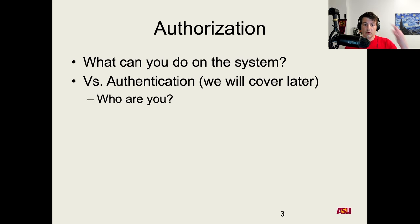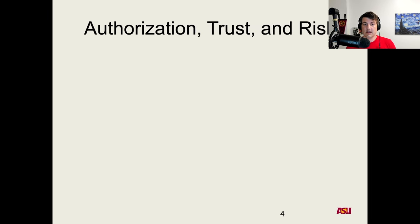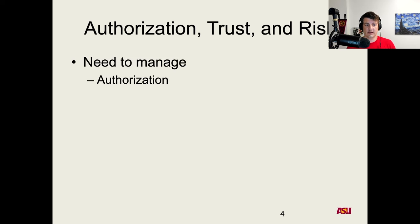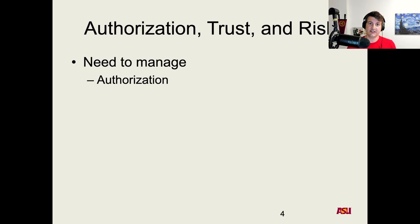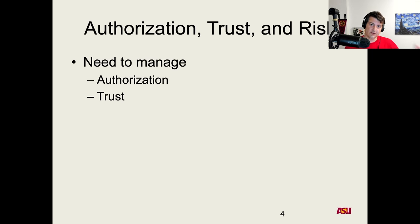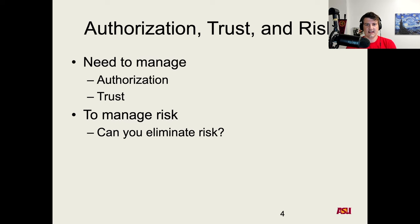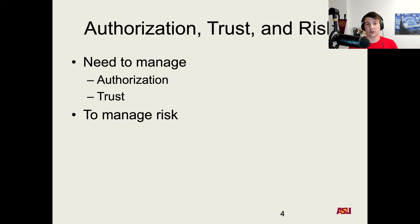You can see that this is actually critical to the security of the system — if your authorization and access control is incorrect and students can change their own grades, you've basically created a really terrible system. So authentication is about who are you, and authorization is what can you do on the system, what actions can you take. There are also related concepts of trust and risk. When thinking about a system at a high level, you need to manage who can do what types of things and what type of trust they're given.